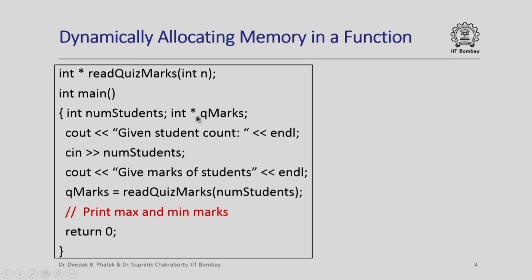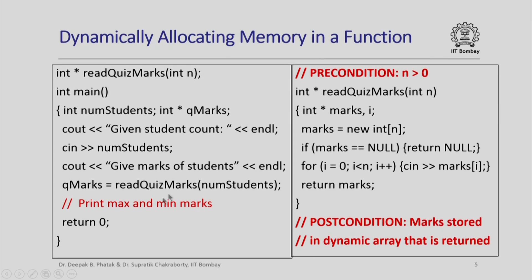So q_marks has to be a pointer to an integer. As you can see, read_quiz_marks will take in an integer number and return a pointer to an integer. Here is a sample implementation. As a precondition, I have n greater than 0. As a postcondition, I guarantee that the marks of the students are going to be stored in a dynamically allocated array that is going to be returned.